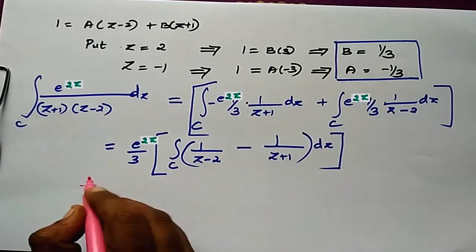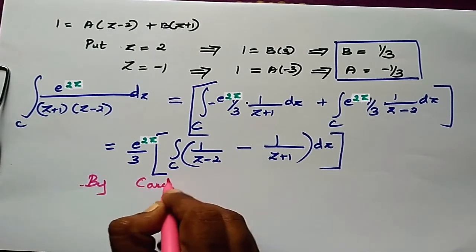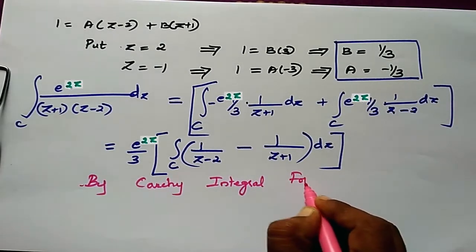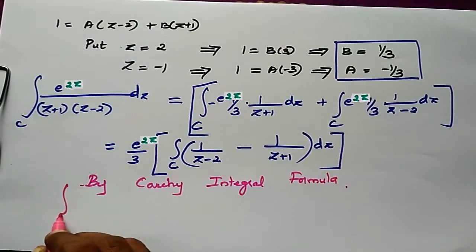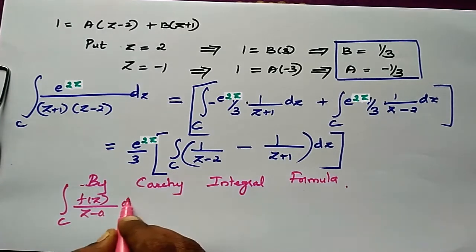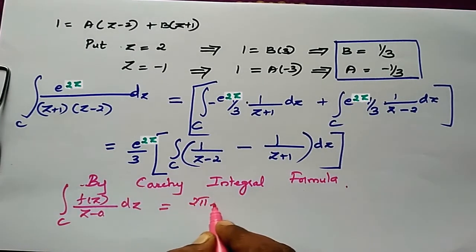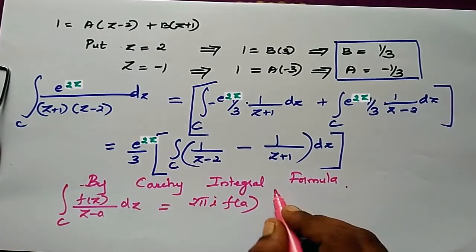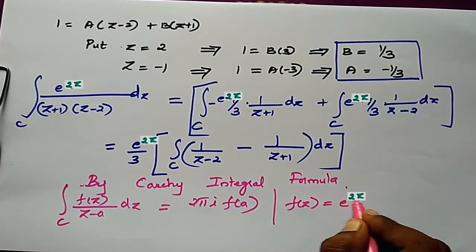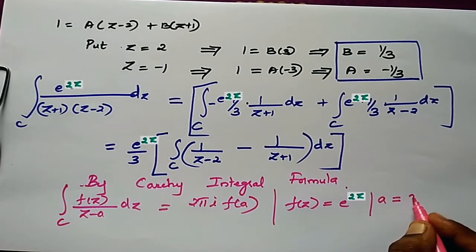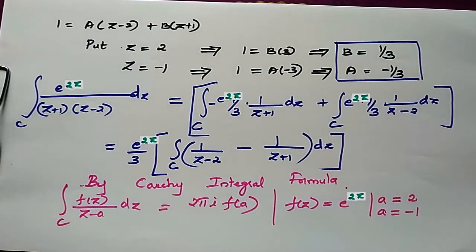By the Cauchy integral formula, integral c of f(z)/(z-a) dz = 2πi · f(a). Here f(z) = e^(2z), with a = 2 for the first part and a = -1 for the second part.